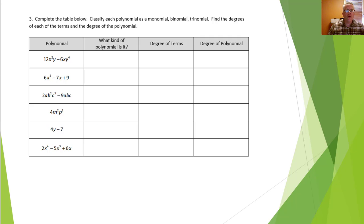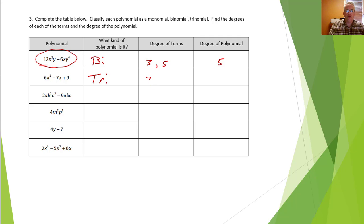Now we're going to classify what kind of polynomial each expression is, write the degree of the terms, and then the degree of the polynomial. This is a binomial — it has two terms. The first term has degree 3, the second has degree 5. The degree of the whole polynomial is the degree of the highest term, so five. This is a trinomial: the first term has degree 2, the second degree 1, the last term is a constant with degree 0. The highest degree is 2, so that's the degree of the whole thing. This one has two terms — it's a binomial. The degrees of the terms are 6 and 3, so the degree is 6.